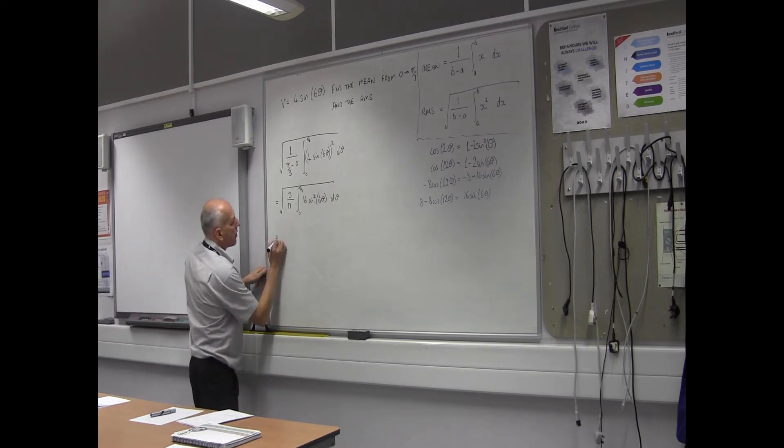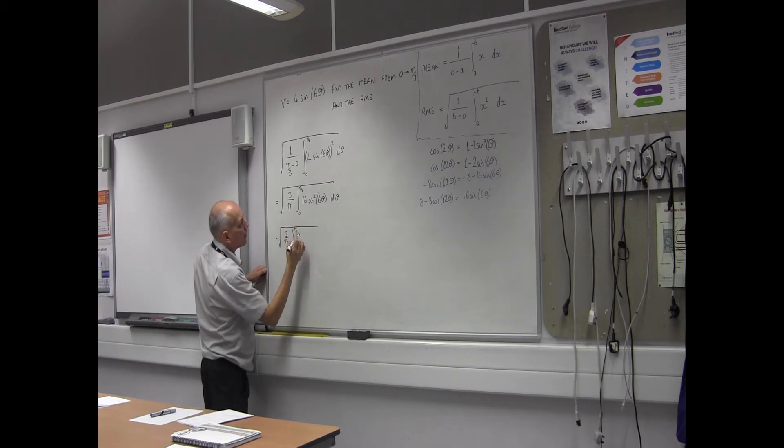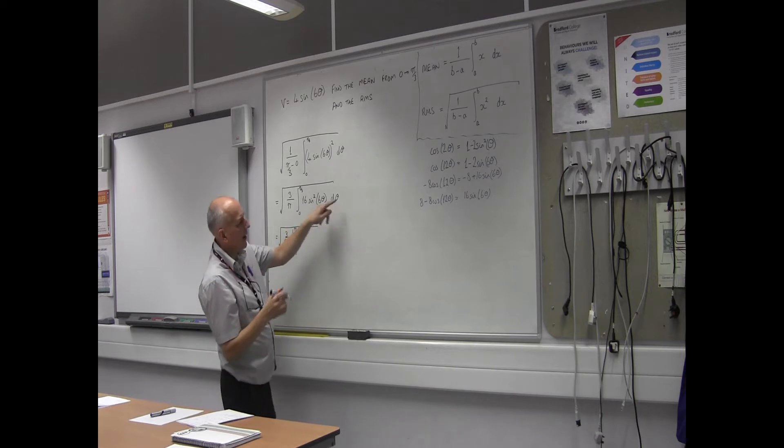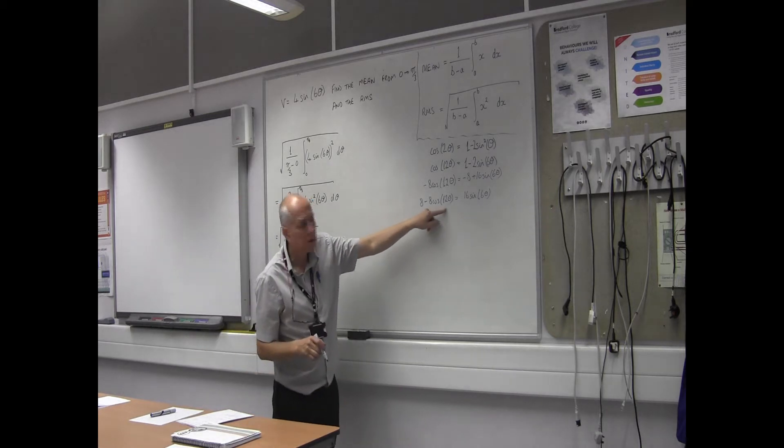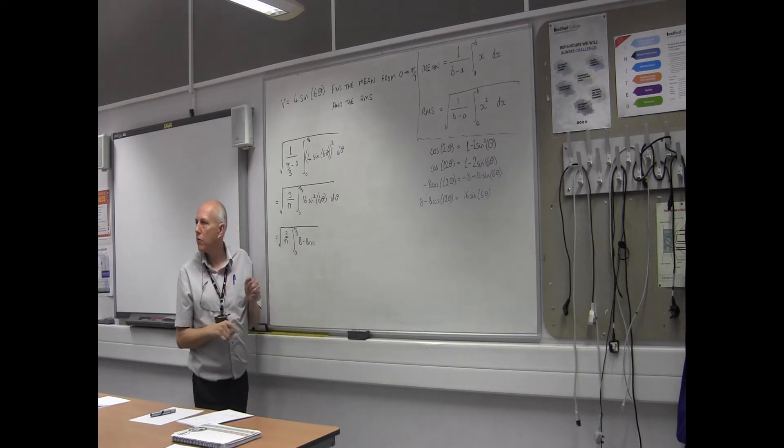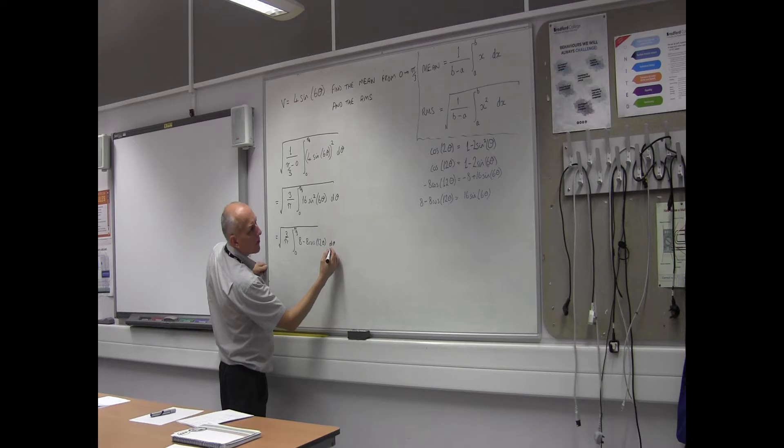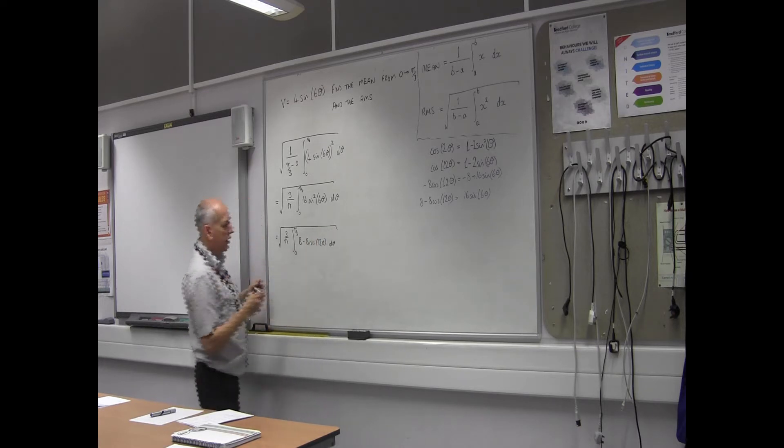Right, so I've now got this: 3 over π, 0 to π over 3, and now it's just 16, etc. I've got this bit here, so that's 8 minus 8 cos, so it's a single cos, it's not a square anymore, that's a big bonus, 12θ dθ. Have I got everything? I think so. All square rooted at the end.